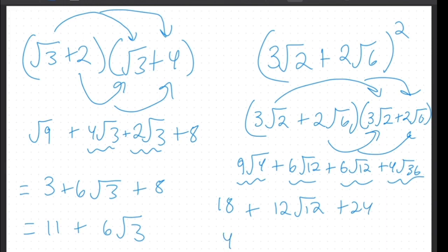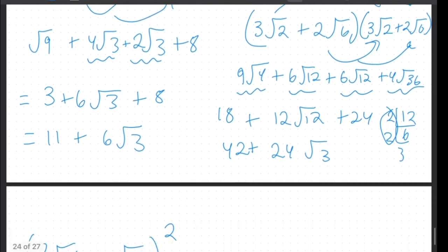So we would get 42 plus root 12. We can simplify. So we can take out a 2. So it would become 24 root 3. Okay.